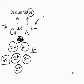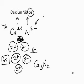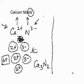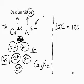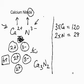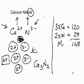We took 3 calciums and 2 nitride ions, so the formula is Ca₃N₂. For the RMM: 3 calciums × 40 = 120; 2 nitrogens × 14 = 28. Total relative molecular mass of calcium nitride: 148.